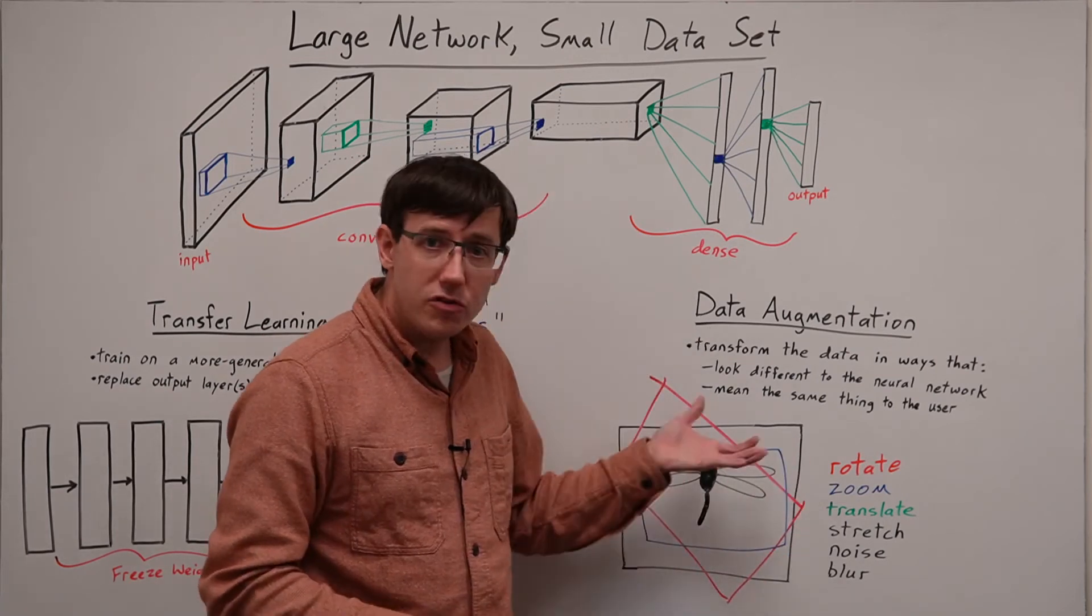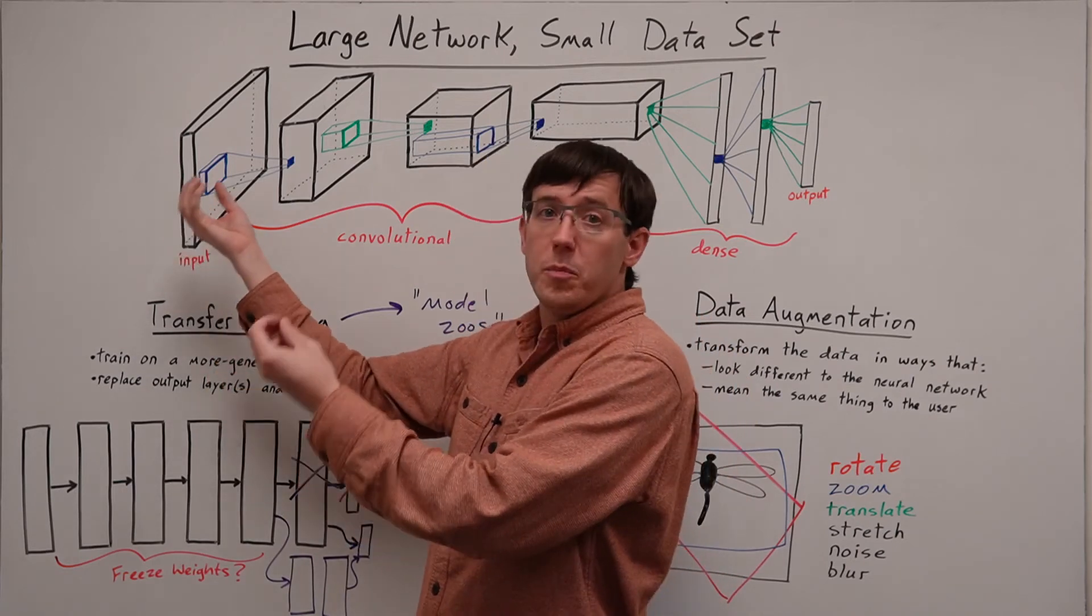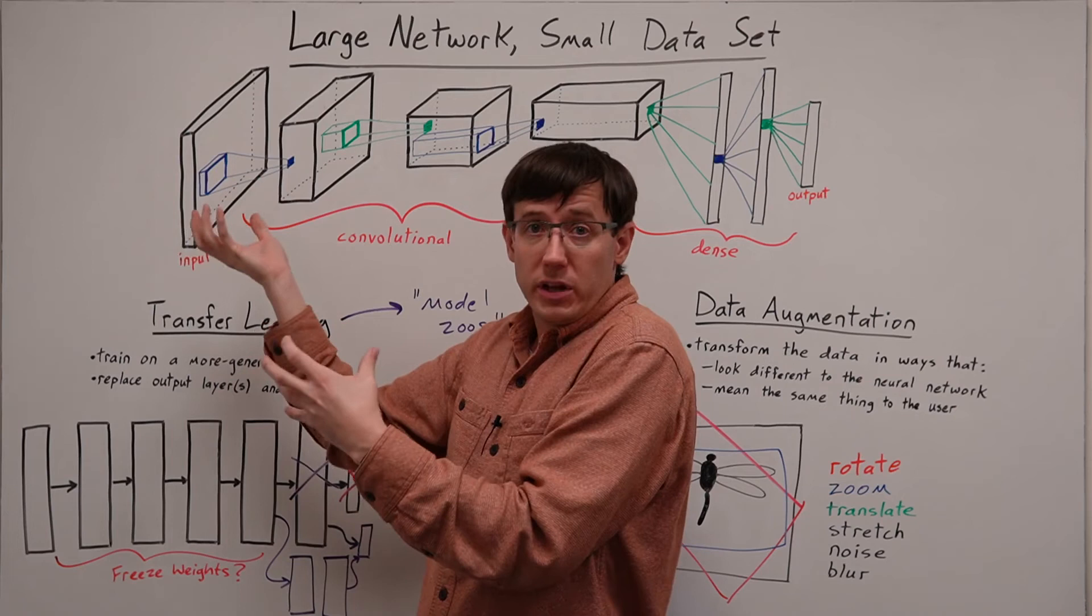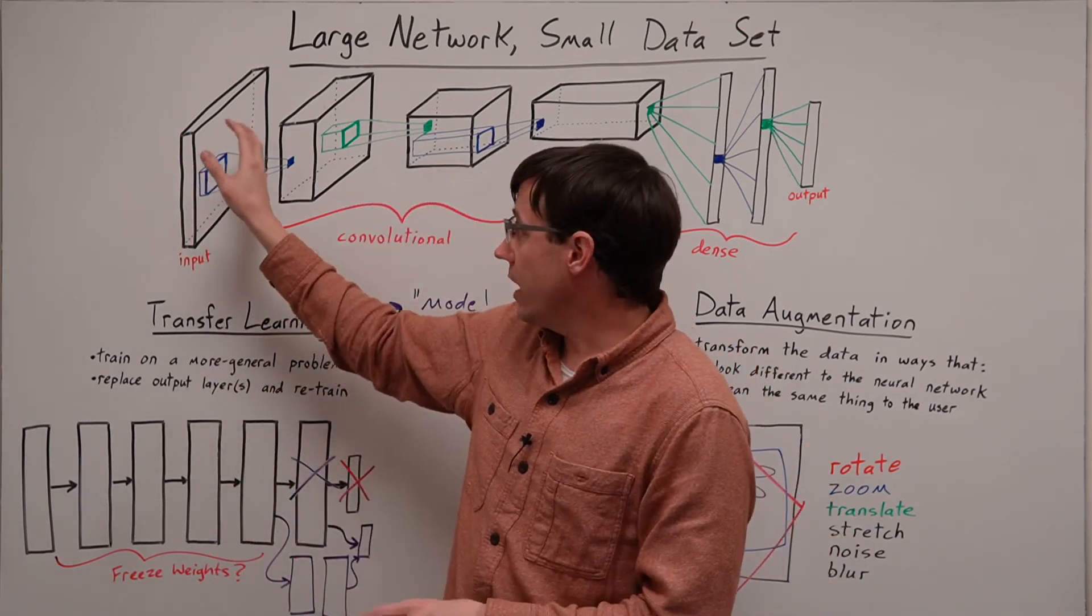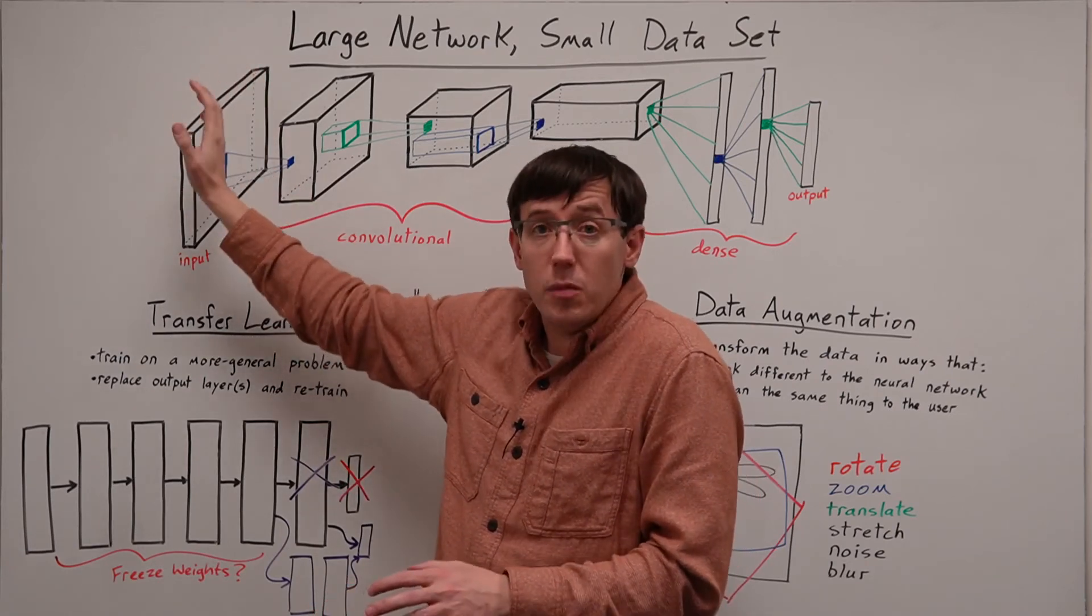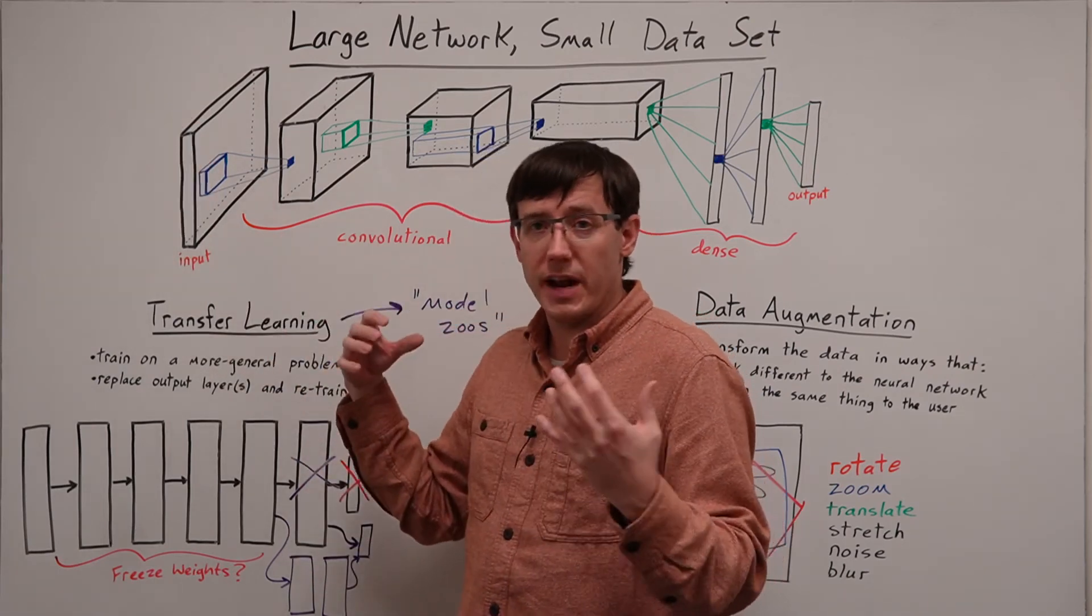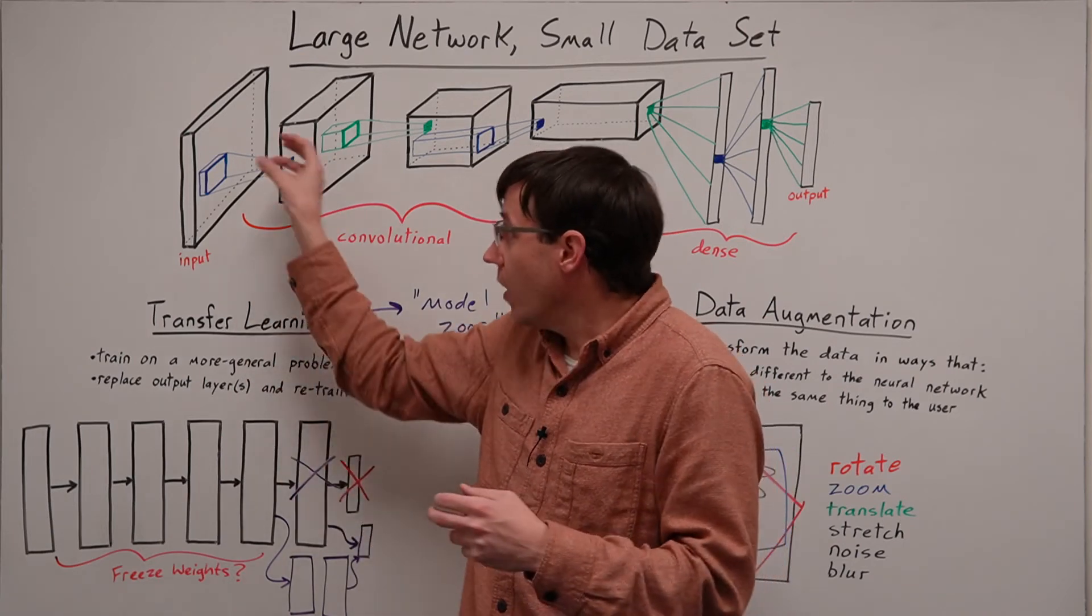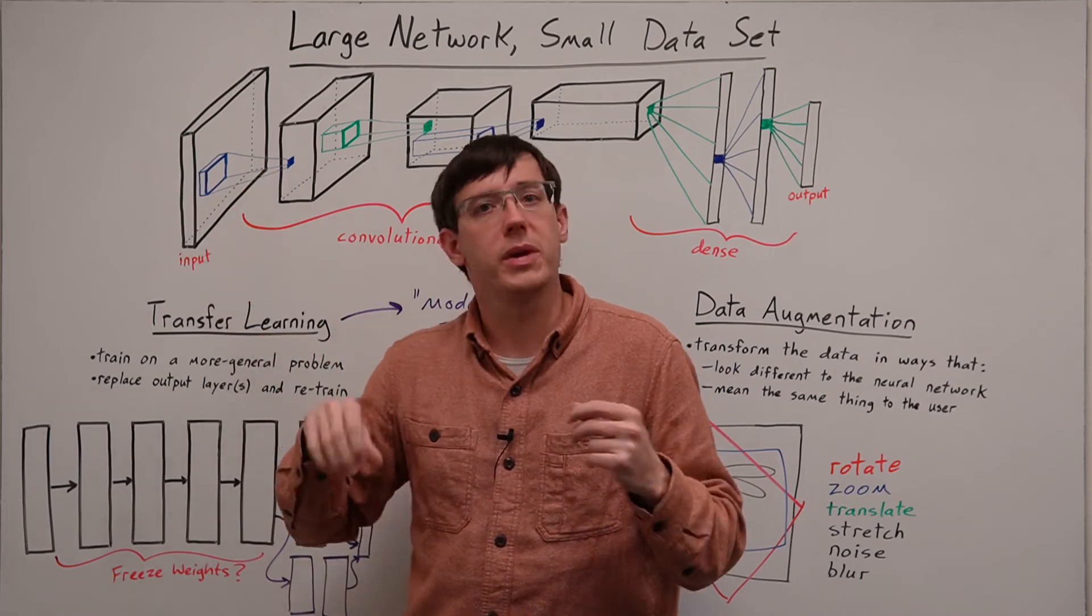And crucially, these sorts of transformations mean that the input data being seen by the neural network is substantially different. When we rotate the image, that means that virtually all of the pixel values in the input tensor have been changed. And this will make it much harder for the network to memorize the specific input examples or to rely on fine details of what pixels appear where.